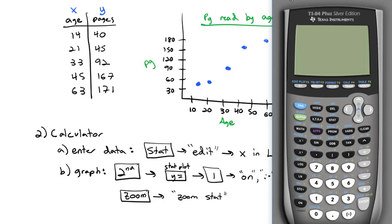So let's look at doing that on our calculator. First, we have to enter in our data. To do that, we'll start by hitting the stat button, selecting edit. And there's already stuff in these lists. To clear it out, I'll highlight the list name and hit clear enter. And that clears out the list. Clear enter. And then I'll put in L1 my x's. My x's were 14, 21, 33, 45, and 63. And then L2, I'll put my y's. 40, 45, 92, 167, and 171.